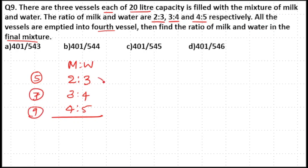I don't know the LCM so I will directly multiply the first ratio with 7 into 9, second ratio with 5 into 9, and third ratio with 5 into 7. Now the first ratio will become 7 into 9, that's 63. 63 into 2 is 126, and 63 into 3: 3 threes are 9, 3 into 6 is 18, so 189.